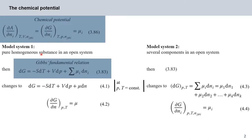Let us first assume that we have a pure homogeneous substance in an open system. Then one of our Gibbs fundamental relations for a change in free enthalpy DG, here in equation 3.83, changes to equation 4.1: DG equals minus S dT plus V dP plus mu dN. At constant pressure and temperature, this reduces to delta G over delta N at constant pressure and temperature equals our chemical potential.